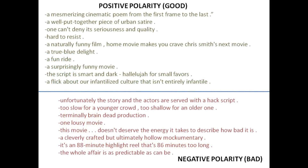I found a dataset somewhere on the internet that contains 5,000 positive and 5,000 negative reviews. They basically just come in a text file, one per row, and examples of these reviews are shown here in green and red. Given all these examples, we'll try to think about how we can write an algorithm that can take another arbitrary review and decide if it is positive or negative.